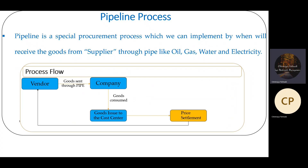We are using electricity in our homes, right? Electricity also comes through pipes, through cables. We are consuming based on how much quantity we are consuming, and that much amount we are making payment to the vendor. In the same way, when a vendor sends goods through pipe to the company, the company will consume it, and based on how much quantity the company consumes, the company will make payment to the vendor.